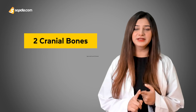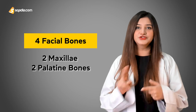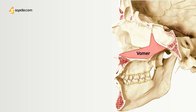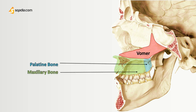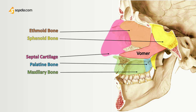More precisely, we have six bones that articulate with the vomer. Two cranial bones: one is the sphenoid and the other is the ethmoid. Then we have four facial bones, of which two are maxilla and the other two are palatine bones. If we take a closer look at the articulation, on the midline, it articulates inferiorly with the maxilla and palatine bones, superiorly with the sphenoid via its wings known as alae, and anterosuperiorly with the ethmoid bone.